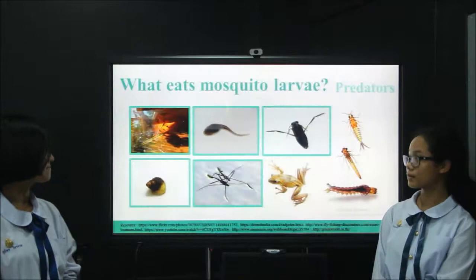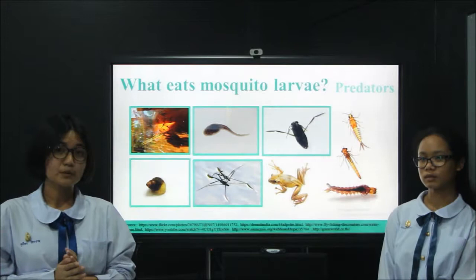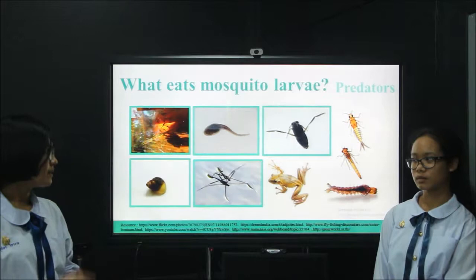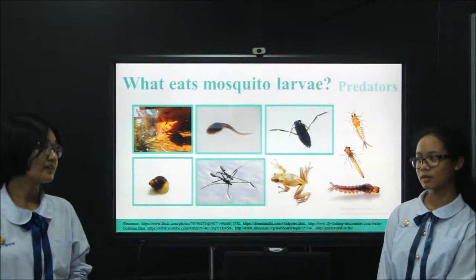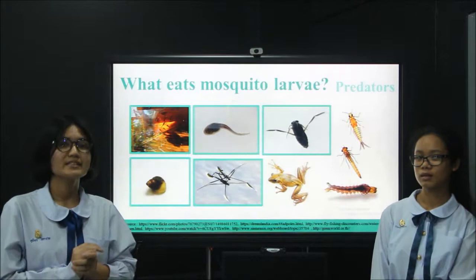We also found predators — creatures which eat mosquito larvae as food — around the house too. And you may know that some types of mosquito larvae are predators themselves. That's strange, but it's true, and I think it's very amazing. So we decided to study this for our project.